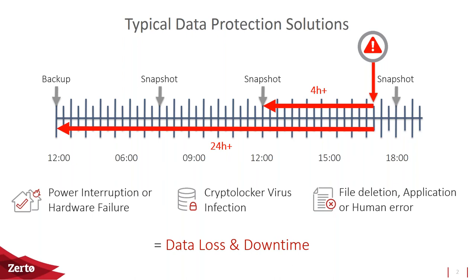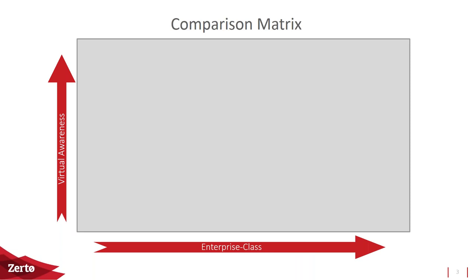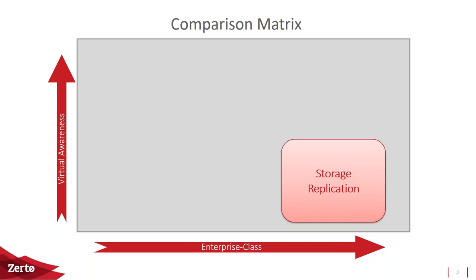I'm going to break into a comparison matrix — it's a rough sketch but gives you an idea of what I want to talk through. On the left going up is virtual awareness — solutions that know what's going on in your virtual environments. Across the bottom to the right is enterprise-class feature sets and availability, scalability, redundancy, and resiliency. We'll first talk about the bottom right where we place storage application or array-based replication.